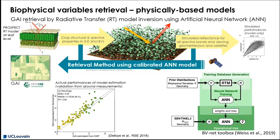For each possible value of biophysical variables and each observation angle, the spectral reflectance is simulated. All these simulations and the corresponding biophysical variable values are then used to train and calibrate an artificial neural network (ANN) model to invert the process. This calibrated neural network can then be used to retrieve, from the satellite observation, the biophysical variable's value corresponding to this reflectance and this observation geometry.